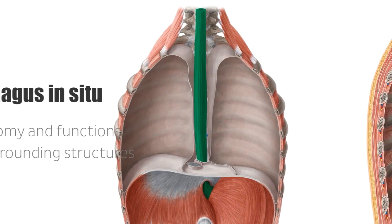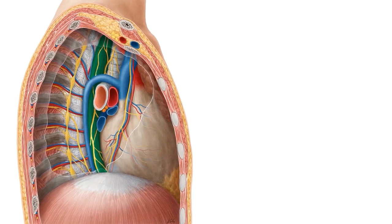Now we're going to continue talking about the anatomy and functions of the esophagus using this image, which is a lateral right view of the thorax. If we were to cut your torso as you can see here, and then remove the right lung, we are left with the different structures visible here, including the highlighted esophagus.